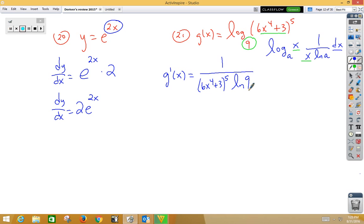Natural log of the base of the log, which is 9. And then we're going to multiply by the derivative of this inside function, which is a chain rule. So we will have 5 to the 4th power, 6x to the 4th plus 3, multiplied by the derivative of the inside, 24x cubed.